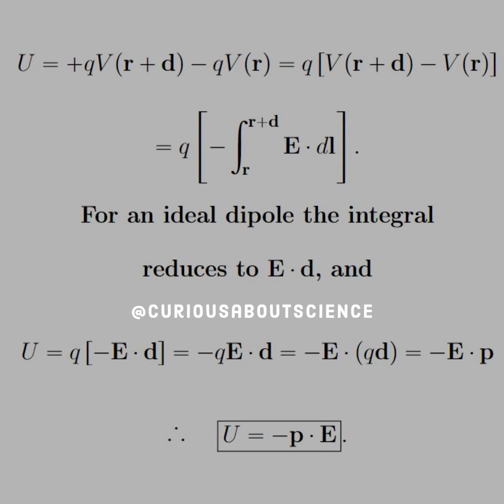So the energy is then plus Q times V of R plus D minus Q times V of R. Just add them together and the minus sign keeps it together.